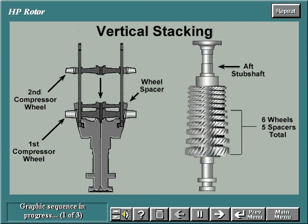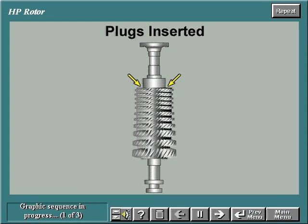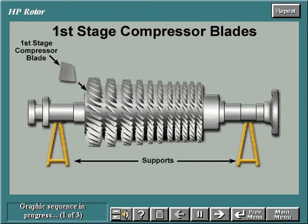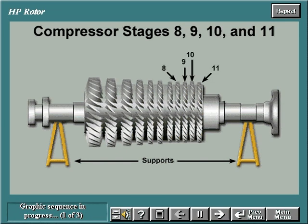Once the last wheel is stacked, the aft stub shaft is slid over the tie bolts and the bolts are tightened. Plugs are inserted in the tie rod slots to prevent particles from entering the slots during turbine operation. The high pressure rotor is then placed into the horizontal position on V-blocks. The first stage compressor blades are inserted into radial slots in the forward stub shaft and staked in position. Compressor blades for stages 8, 9, 10, and 11 are inserted into radial slots in the aft stub shaft and locked in place.